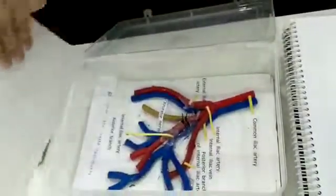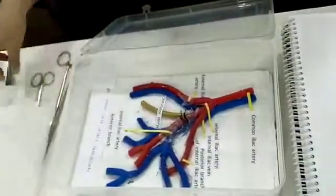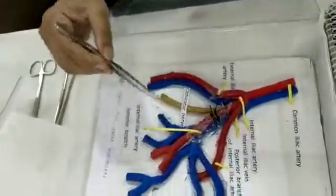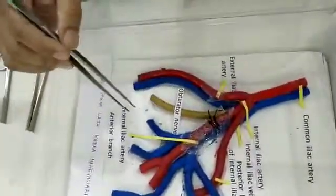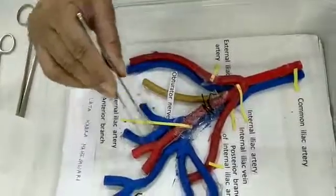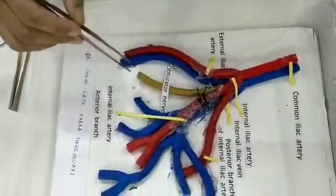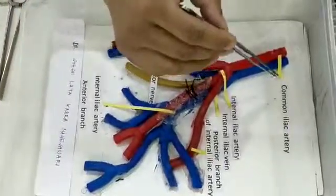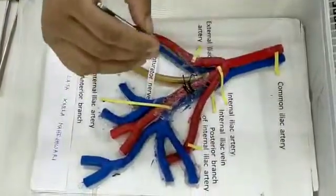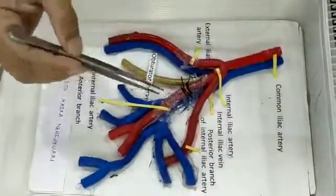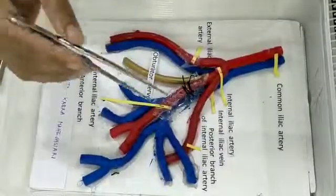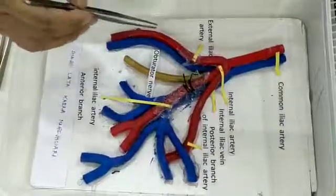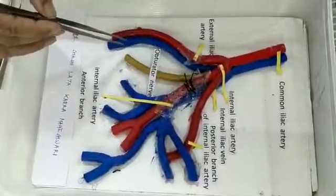I have used plastic tubes which are sprayed with color to represent different types of arteries. These are the veins in blue color, and this is the obturator nerve. This is the common iliac artery, internal iliac artery below, internal iliac vein, posterior division of internal iliac artery, obturator nerve, external iliac artery, and external iliac vein.